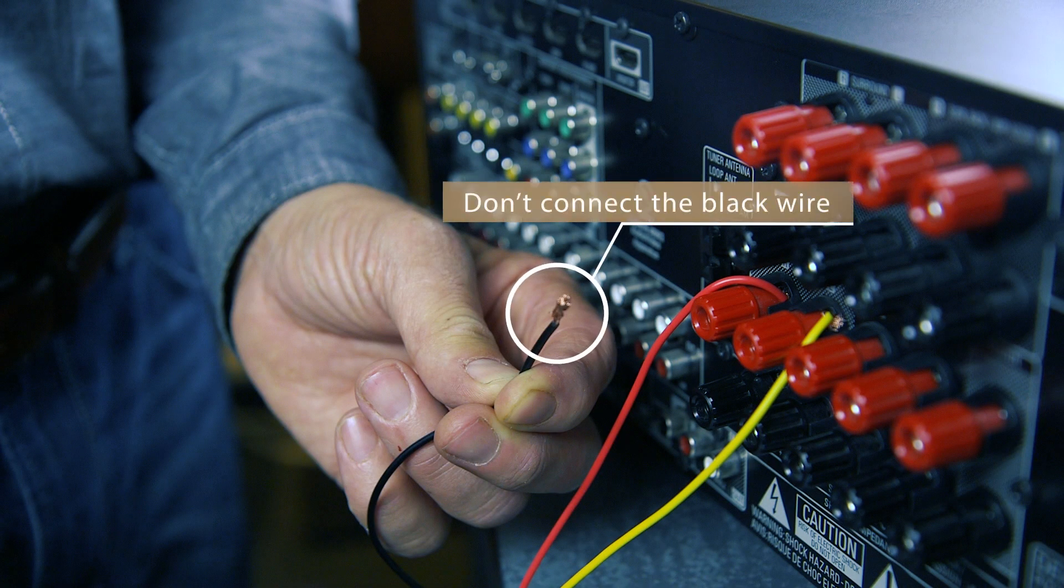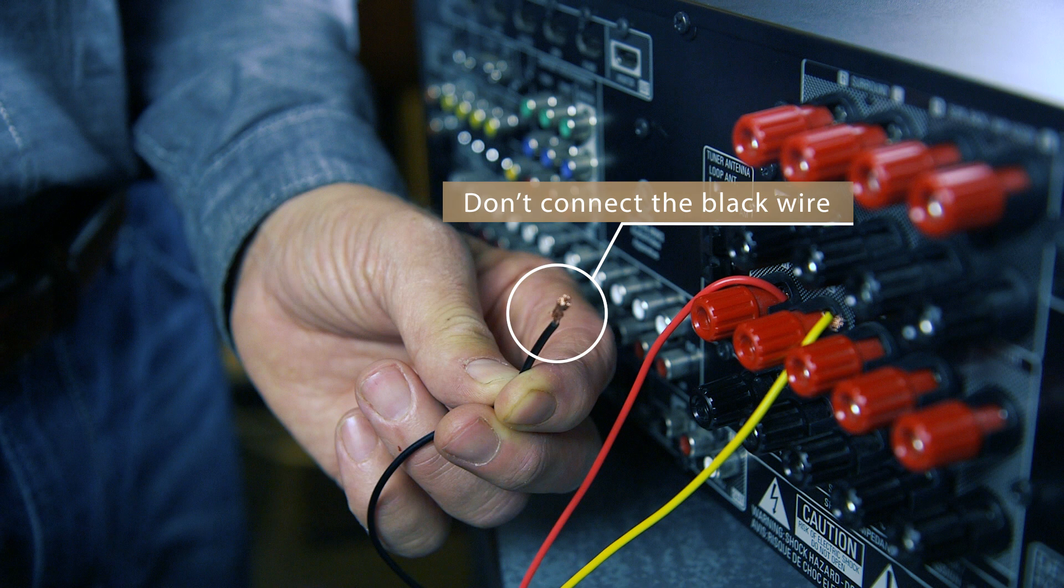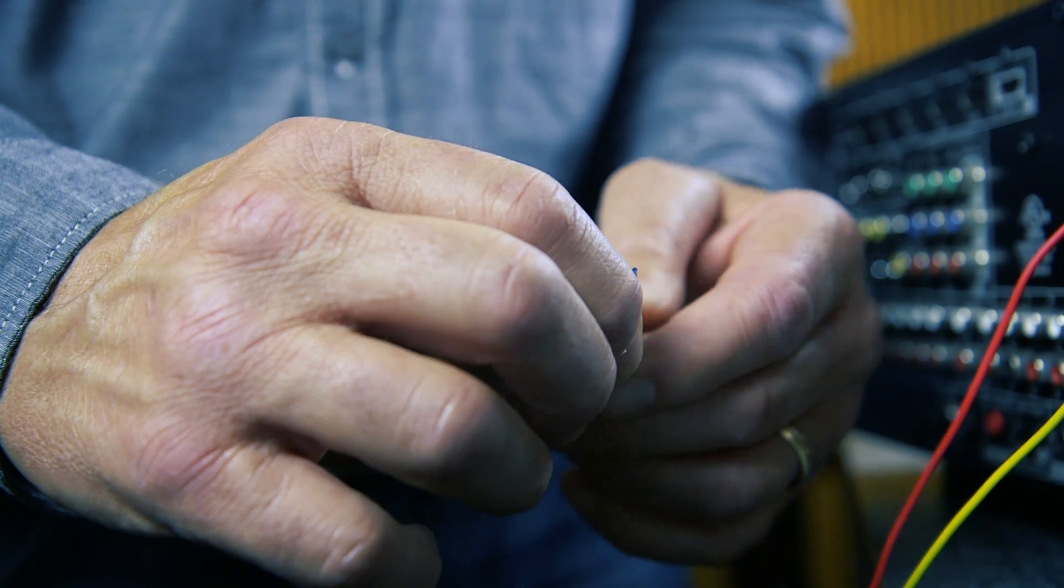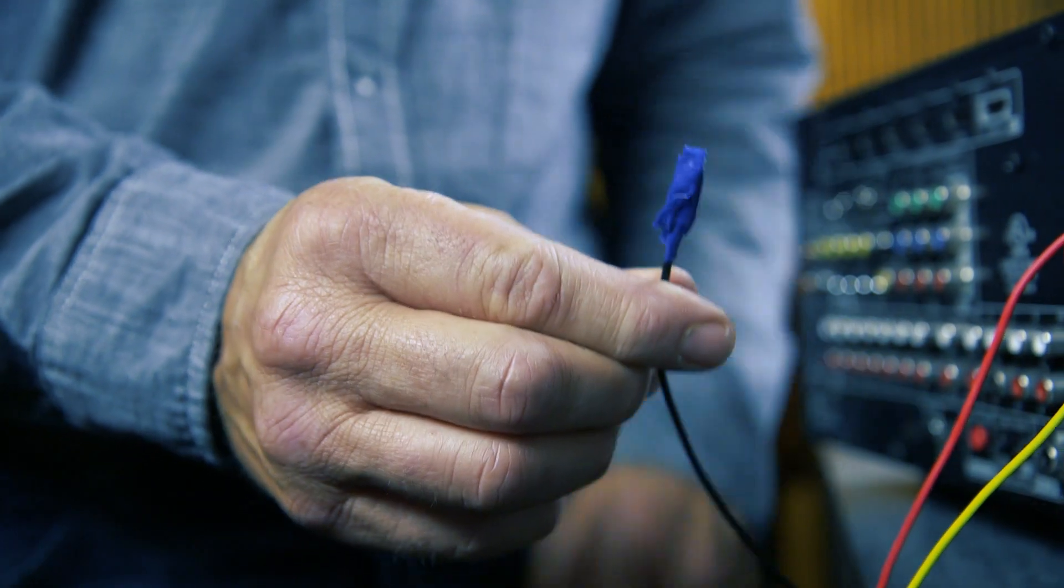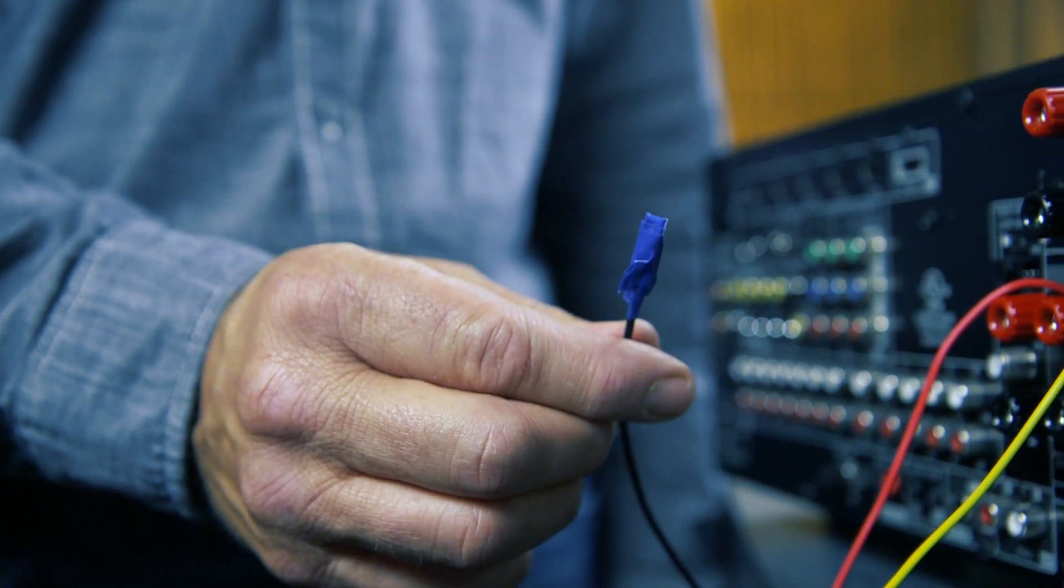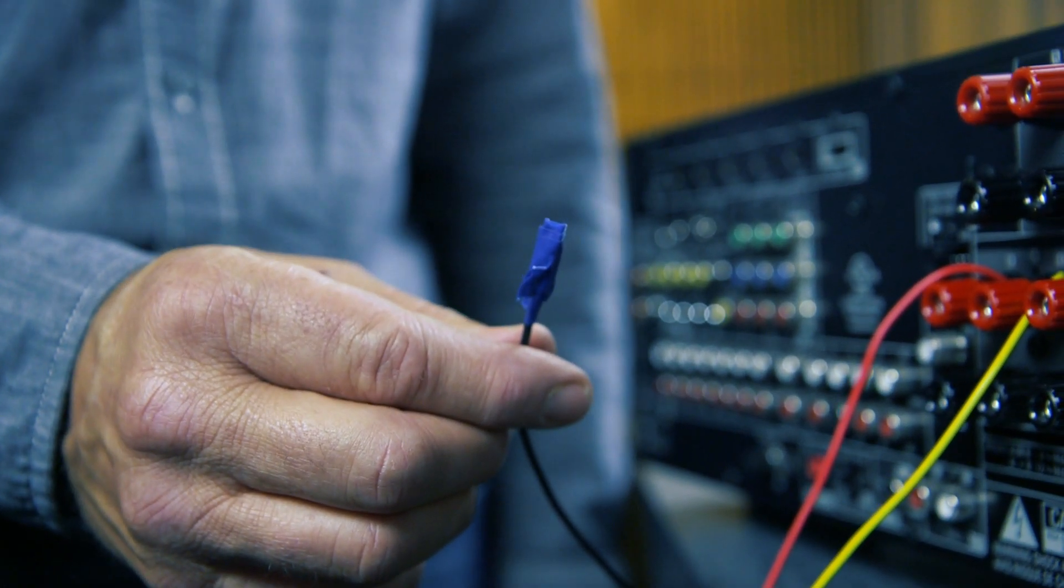Next, do not connect the black wire. It should be floating or hanging down without connection to any terminal. Use a small piece of electrical tape to cover the exposed strands on the black wire to avoid accidentally shorting out the connection.